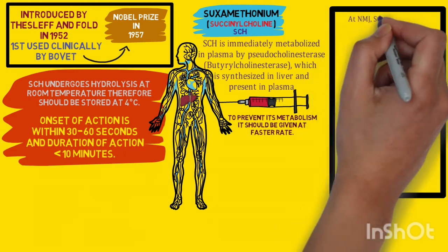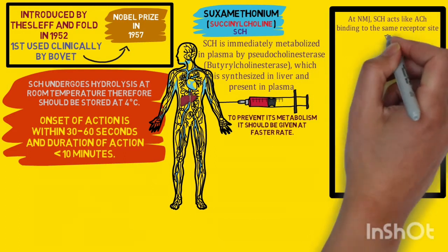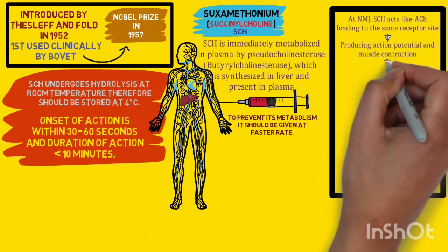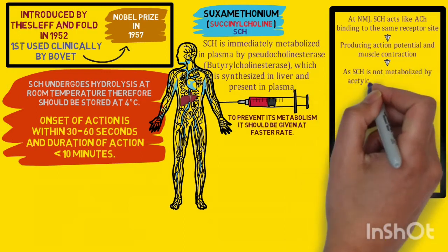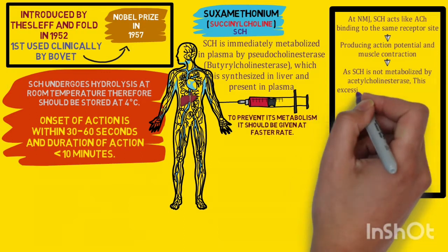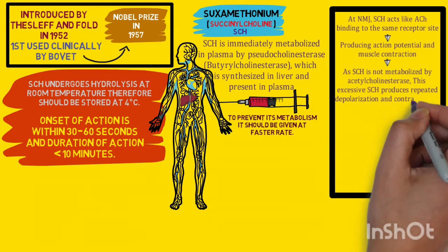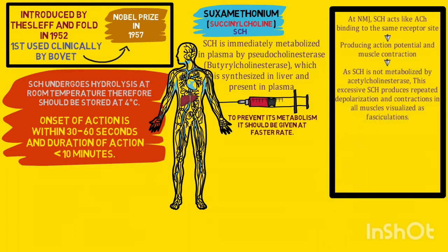At the neuromuscular junction, succinylcholine acts just like acetylcholine, binding to the same receptor, producing action potential and muscle contraction. However, unlike acetylcholine, which is immediately metabolized by acetylcholinesterase present at the neuromuscular junction, succinylcholine is not metabolized by this enzyme. Its metabolism depends on the concentration gradient between plasma and neuromuscular junction, making excessive succinylcholine available at the neuromuscular junction.